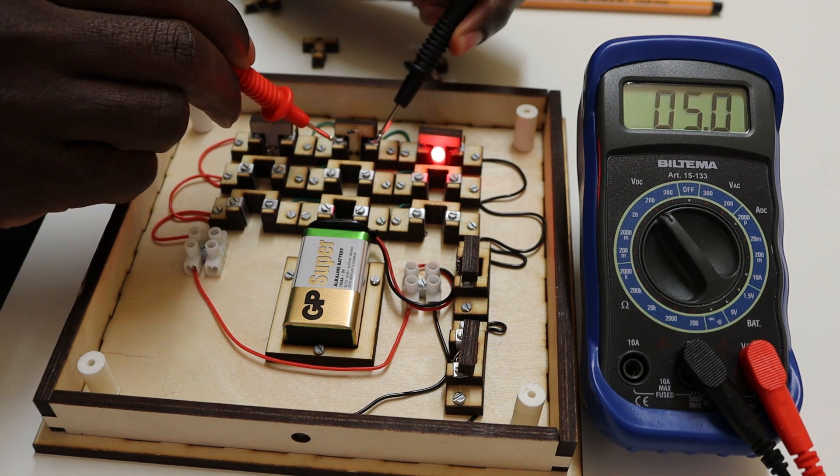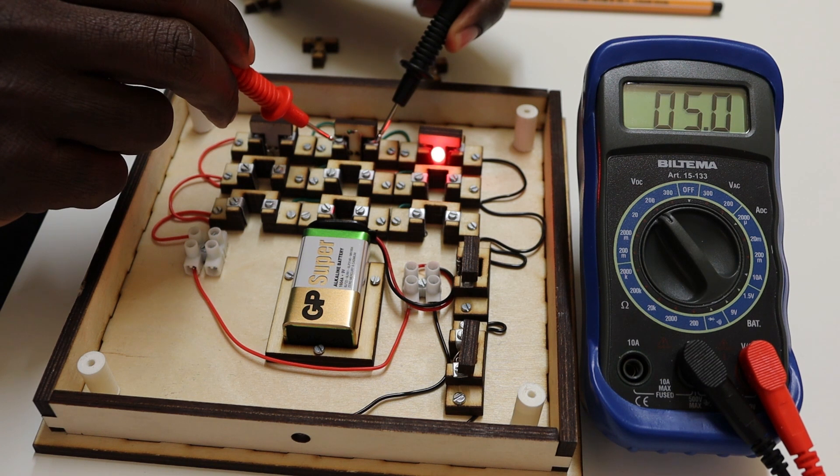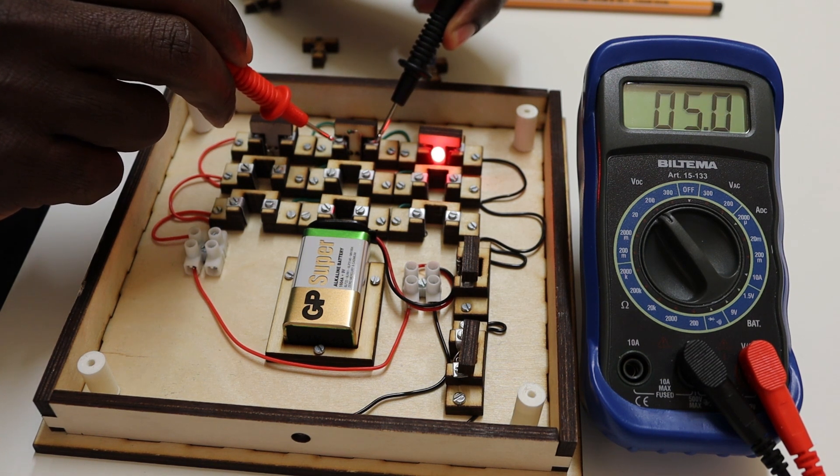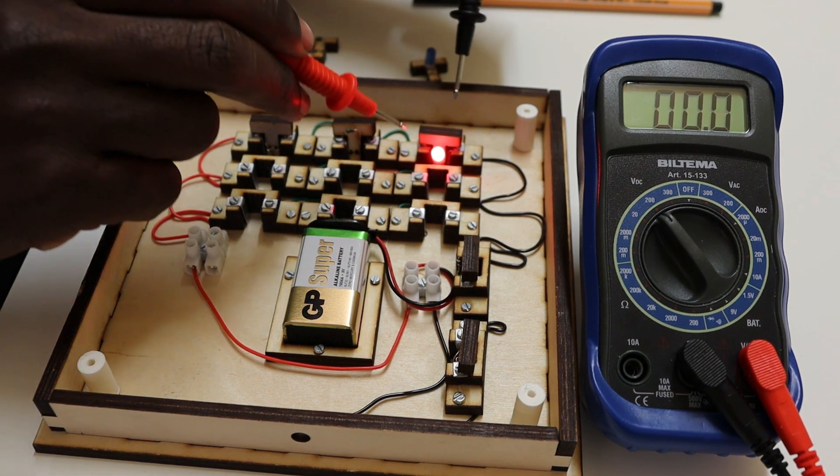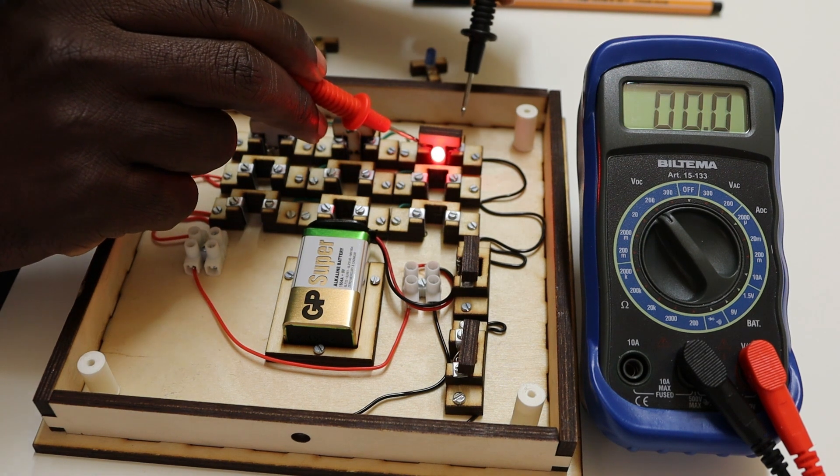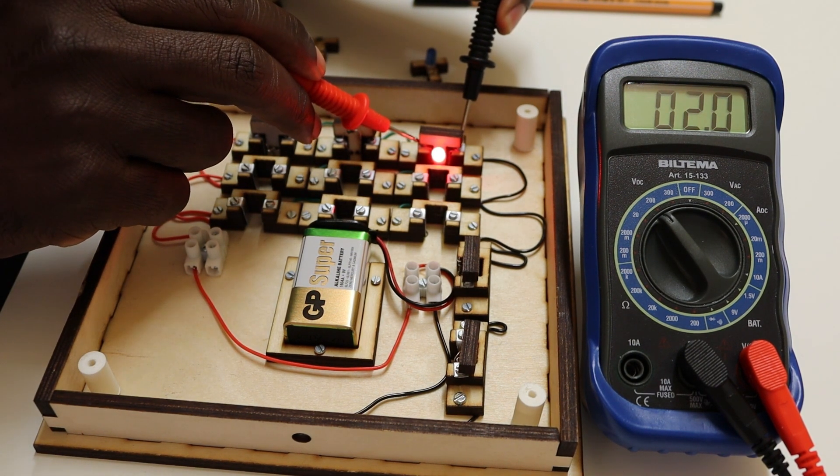You see, the resistor has dropped 5 volts. Nice. What about the LED? Let's go again. The LED has dropped how much voltage across it? Two.